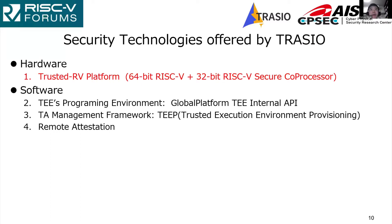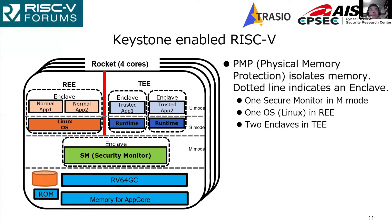From here, I'll talk about security technologies offered by Torazio. They are designed to solve the four problems mentioned. One solution is hardware and three solutions are software-based. The first one is trusted RB hardware. This figure shows RISC-V Keystone. Keystone utilizes PMP — physical memory protection — which isolates memory for each execution environment named an enclave.